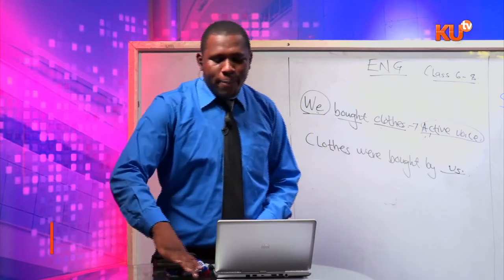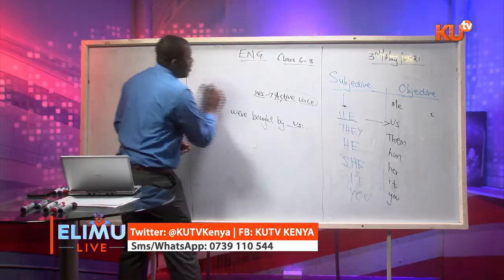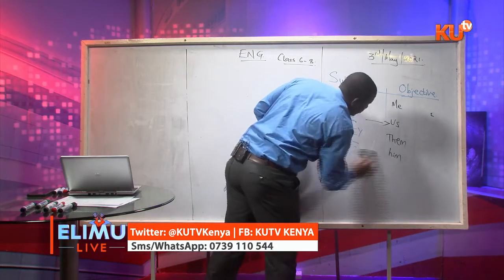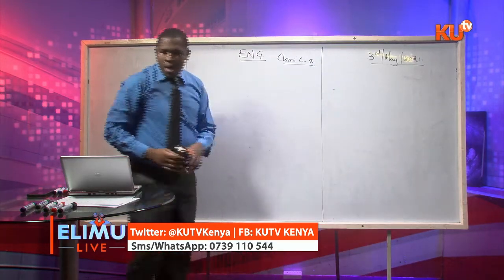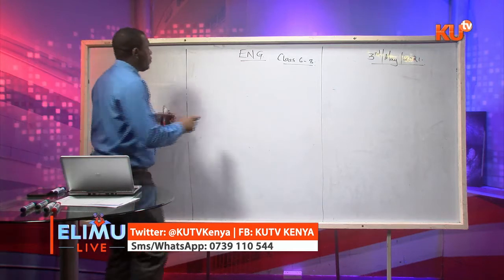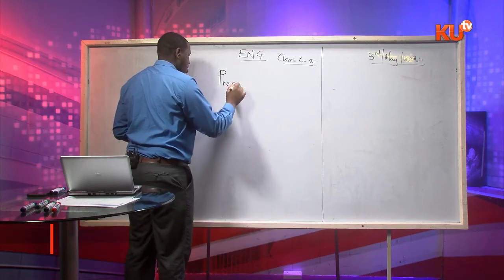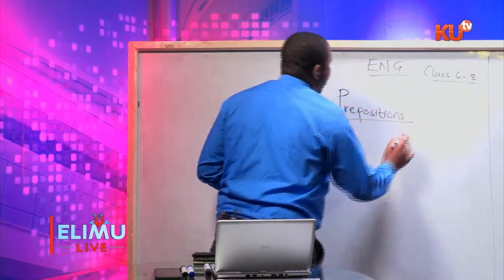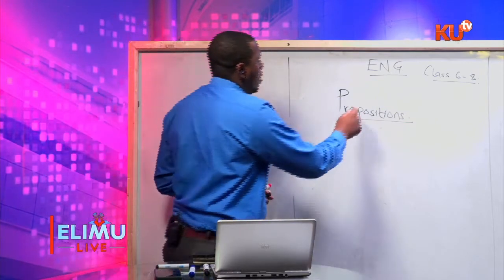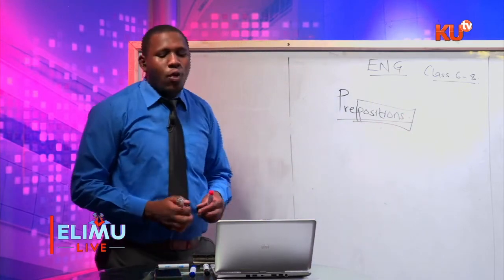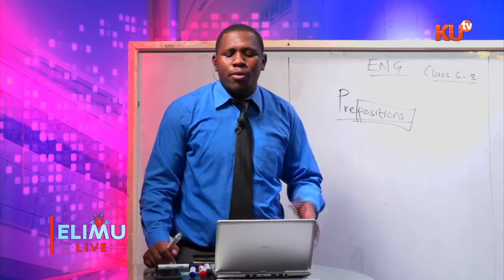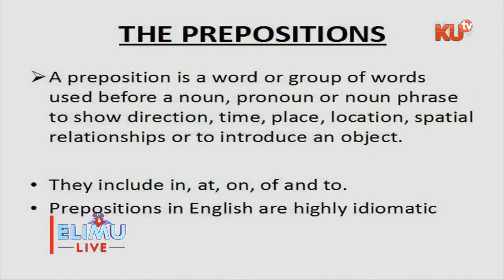Now I get to what we are calling prepositions. The word preposition comes from the word position — where something is. A preposition is a word or a group of words used before a noun, pronoun, or noun phrase to show direction, position, time, place, location, spatial relationships, or to introduce an object.